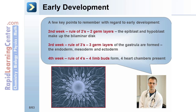There are a few key points to remember with regard to early development. During the second week, it is the rule of twos, referring to two germ layers — the epiblast and hypoblast — that make up the bilaminar disc. In the third week is the rule of threes: there are three germ layers of the gastrula that are formed — the endoderm, mesoderm, and ectoderm.